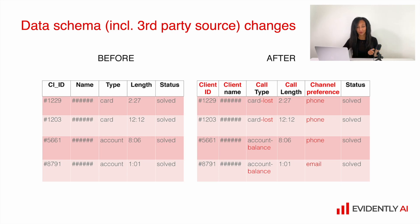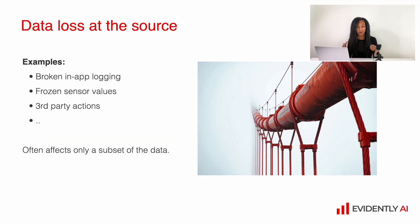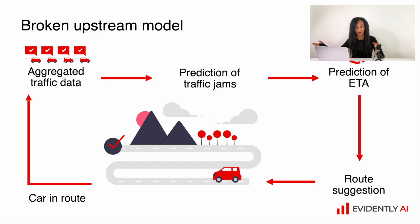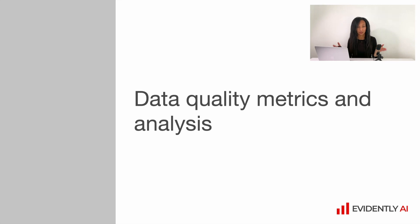This is why it's important to monitor for such things. If you use quite a lot of data sources, sometimes there can be some issues with data sources as well. For example, broken in-application logging or some faulty sensor values in case you use a physical sensor, third-party API issues and many more. We already discussed the scheme where we have several models interacting with one another, and in case there are some issues with upstream models, all the downstream models suffer. This is why we need to monitor for data quality to make sure that we feed our model the right data.